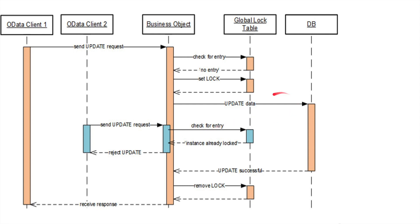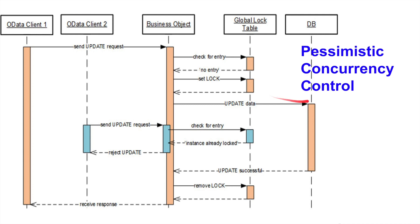Once client 1's update is successful, the lock that was set will be removed, and you won't have any entry in the global lock table anymore. Finally, the response is returned to client 1. So this is another approach we can use to avoid concurrency access. With these two approaches, we can make sure our data in the database tables is consistent. This kind of approach we call pessimistic concurrency control. Let's see each approach in detail in the upcoming videos.